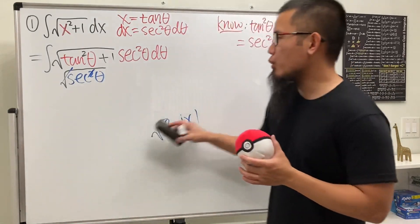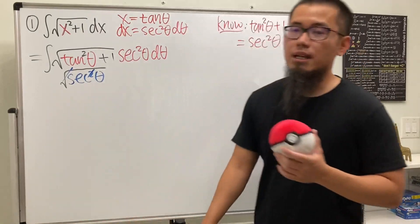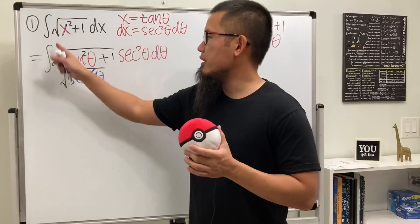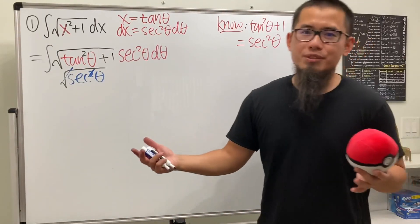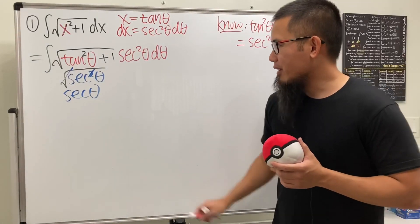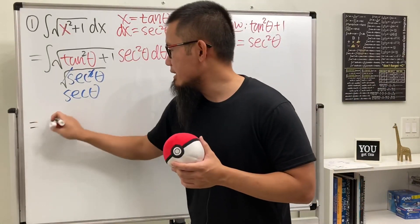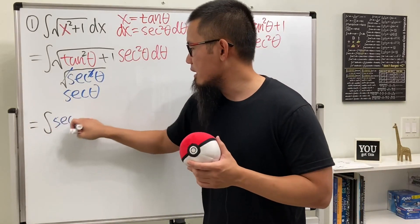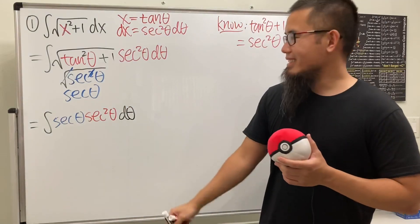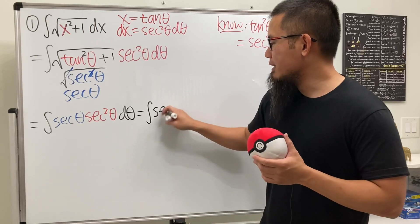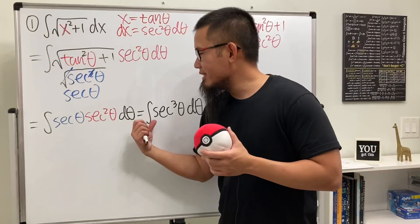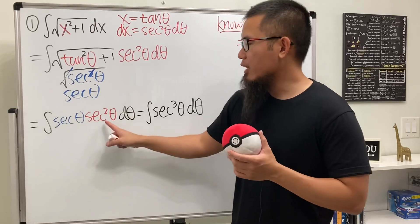For definite integrals worry about the absolute value, but for indefinite integrals just don't worry about it. So we end up with just secant theta, and this is being multiplied by sec²θ, giving us the integral of secant theta times sec²θ dθ — that's the integral of secant to the third power theta, which is actually a very hard integral requiring integration by parts.